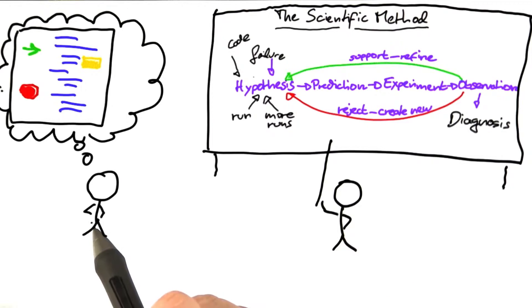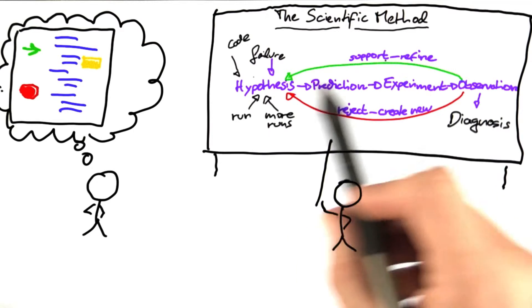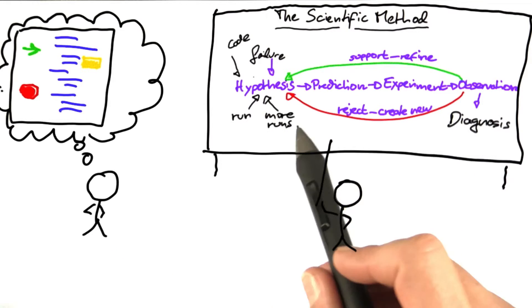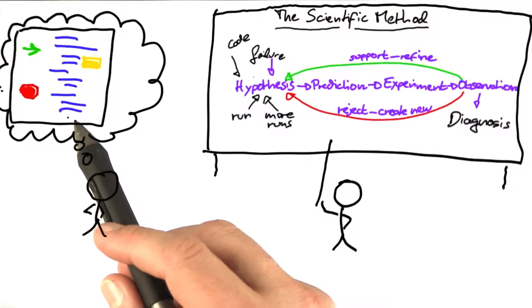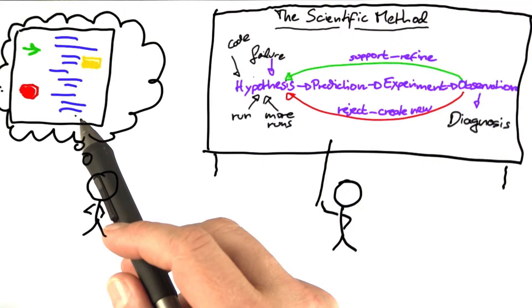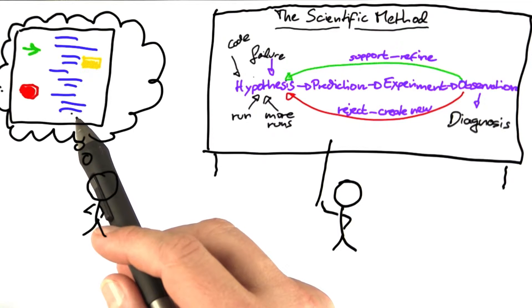So if you're an experienced programmer, and I assume you are, you may now wonder why on earth should I actually go through all these explicit steps if I can just jump into my debugger and fix the problem right away. It's actually likely that you have spotted the problem at the very moment you saw the code.